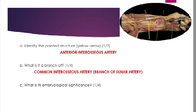This artery gives off many branches: some supply the neighboring muscles, some supply the nutrient artery to the radius and ulna. One important branch to remember is that it sometimes accompanies the median nerve, and that branch is known as the arteria nervae mediana.